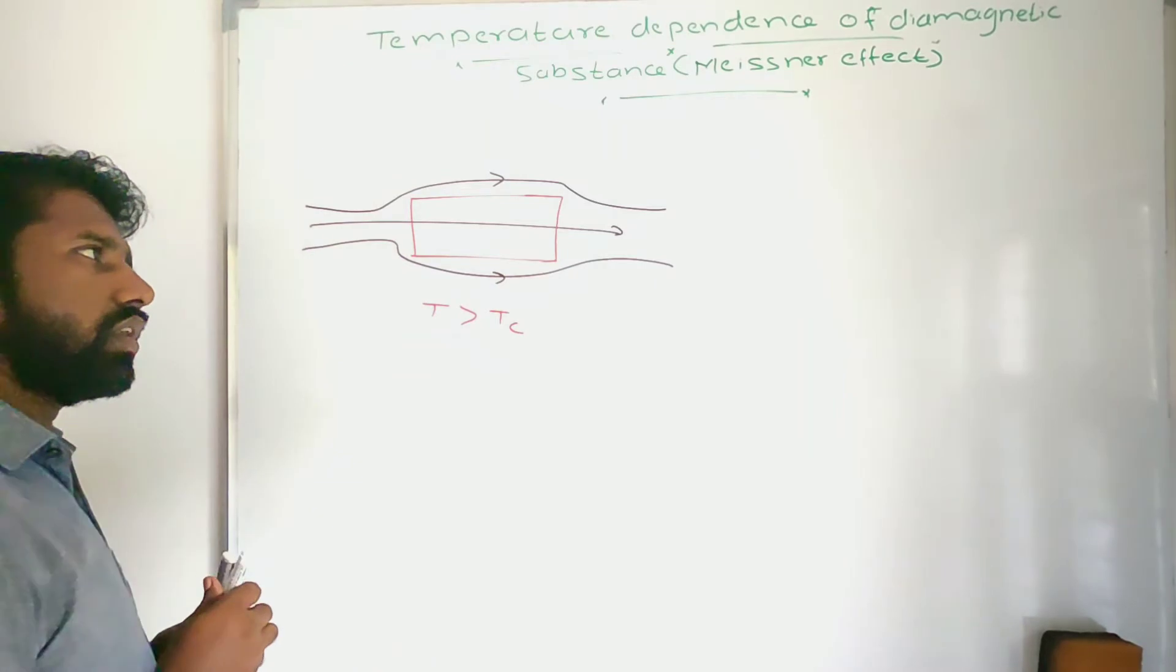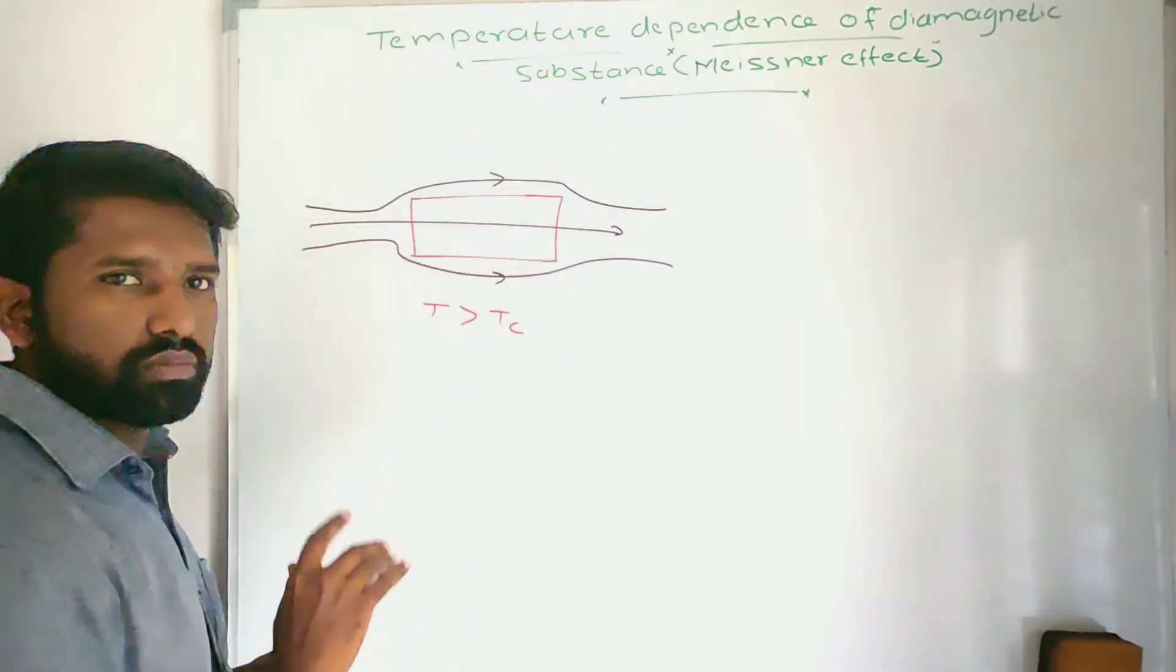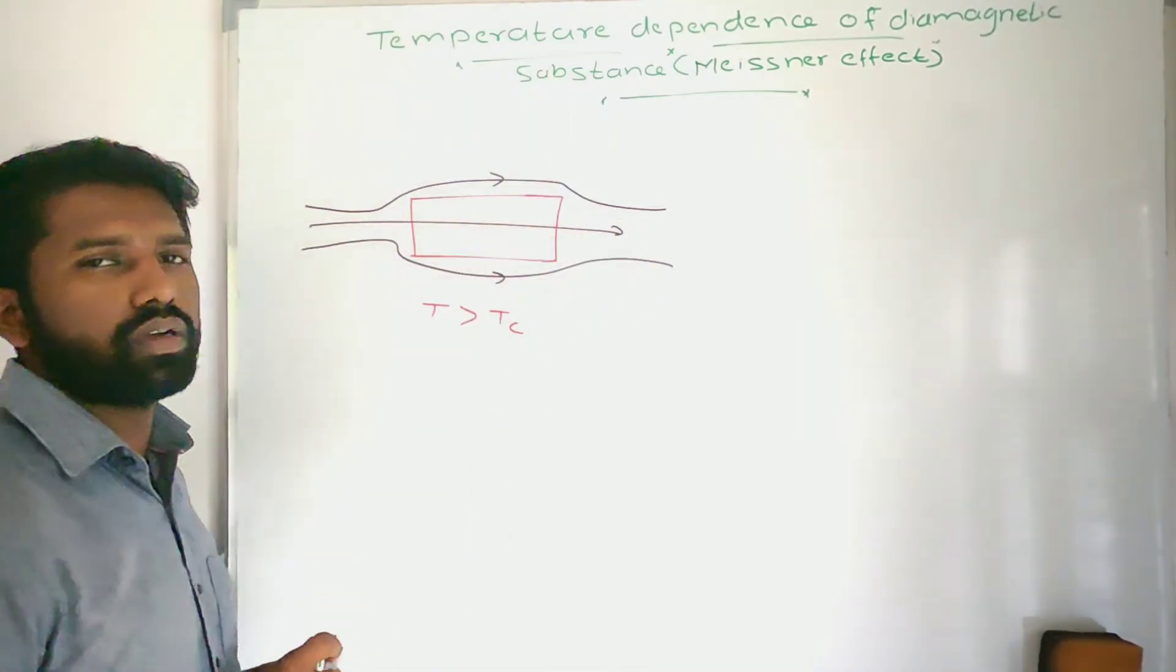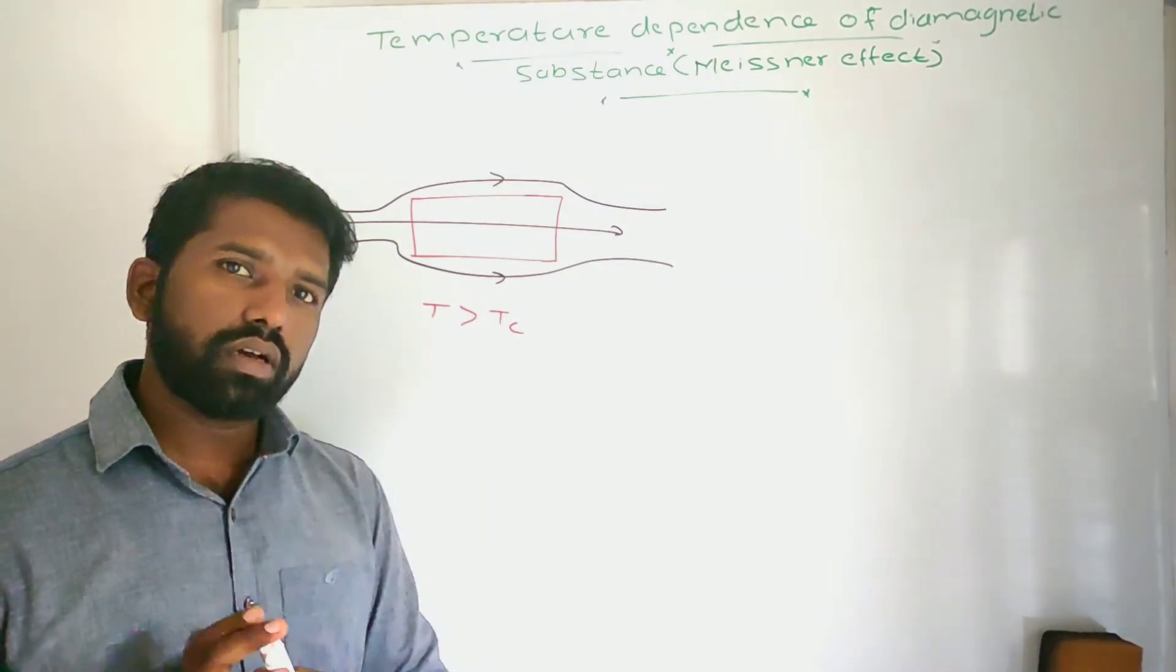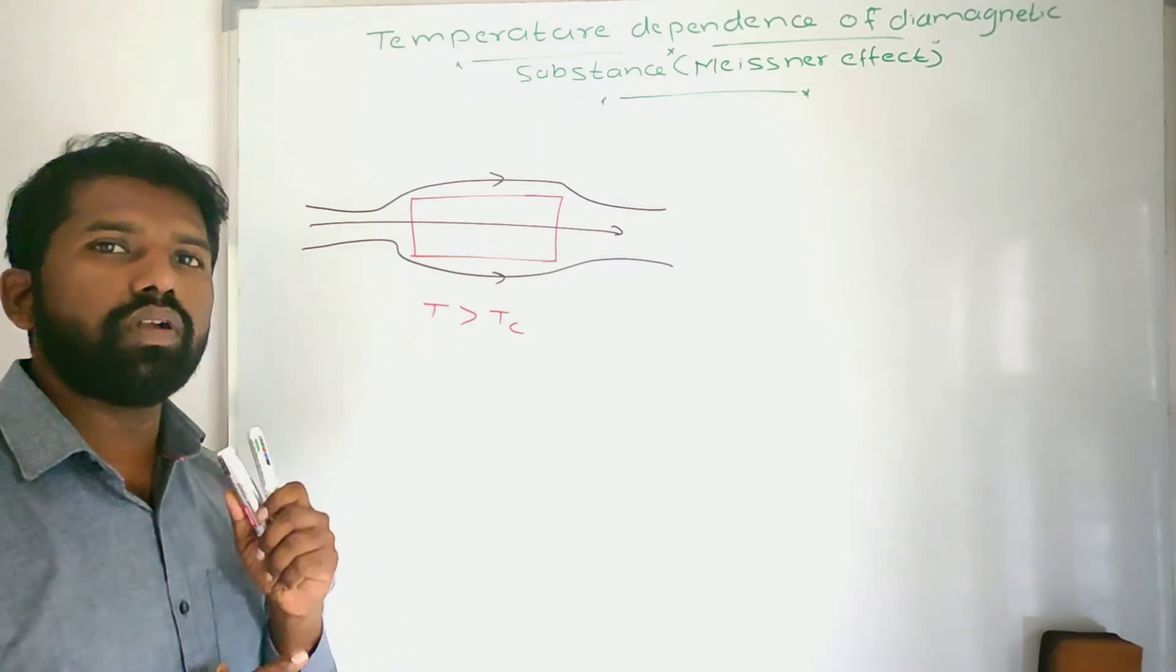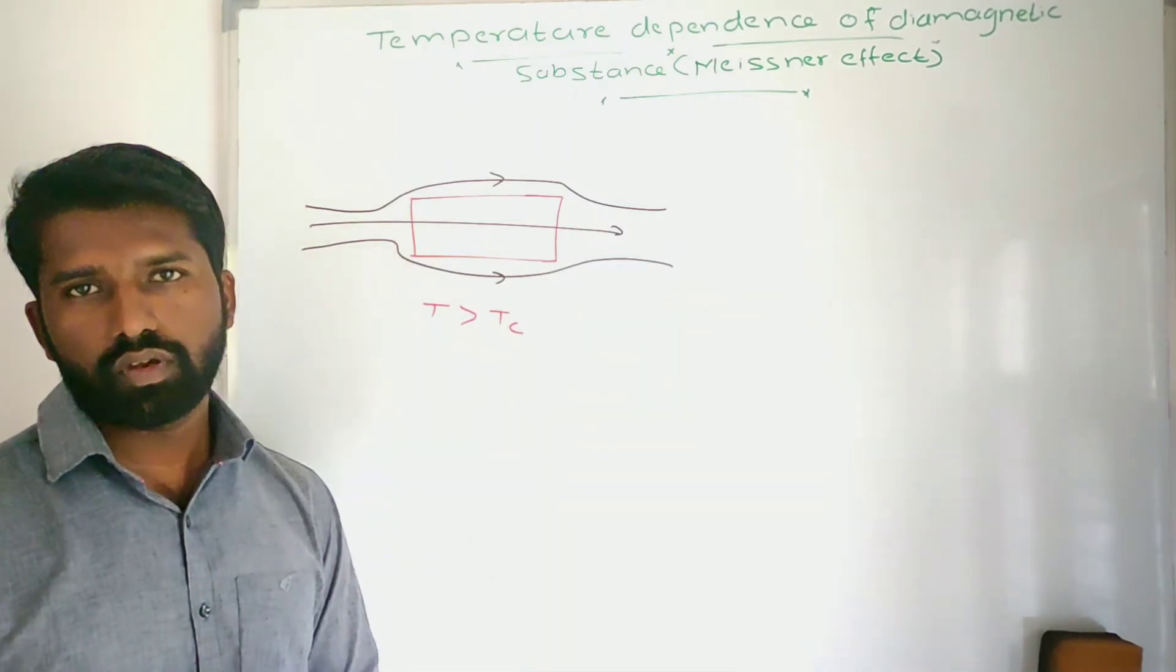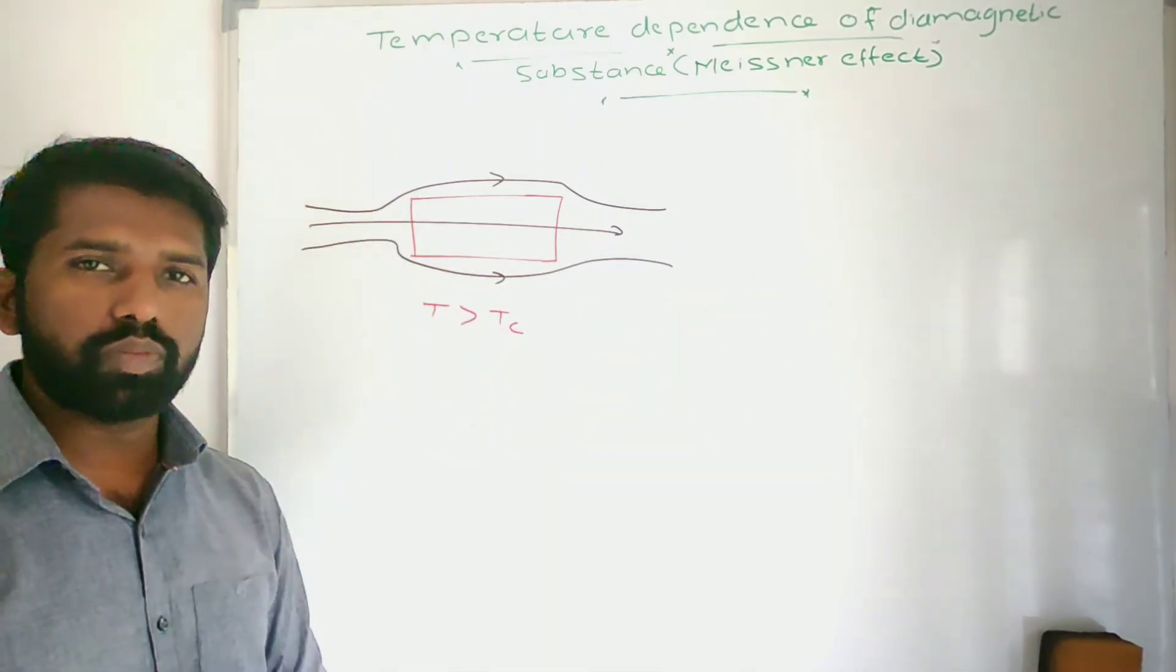Some of the field lines are expelled out, but very few are passing through the material. Diamagnetic property means the material is repelled from the magnet. So that is the diamagnetic property.